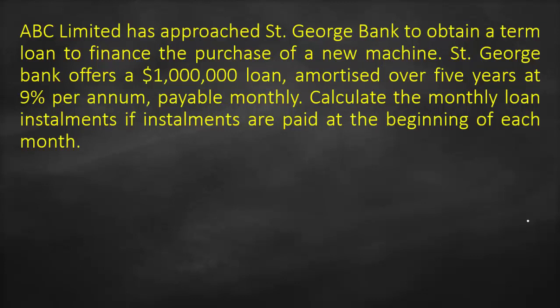ABC Limited has approached St. George Bank to obtain a term loan to finance the purchase of a new machine. St. George Bank offers a $1 million loan amortized over 5 years at 9% per annum, payable monthly. Calculate the monthly loan installments if installments are paid at the beginning of each month.